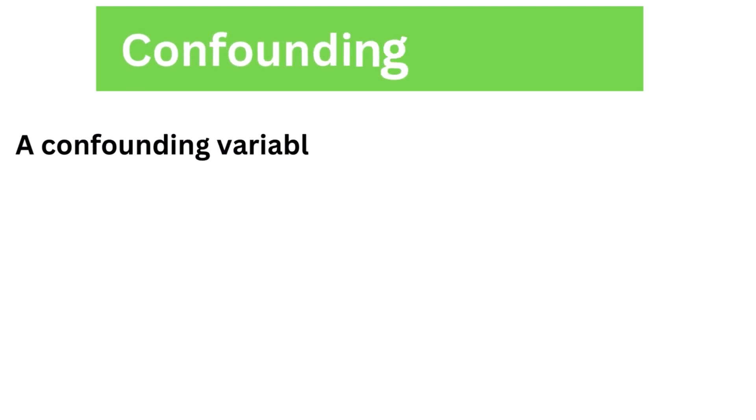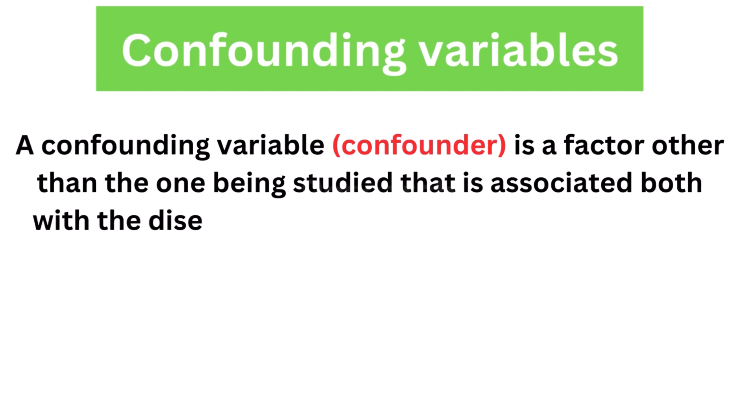What are confounding variables? A confounding variable, or confounder, is a factor other than the one being studied that is associated both with the disease or dependent variable and with the factor being studied, independent variable.